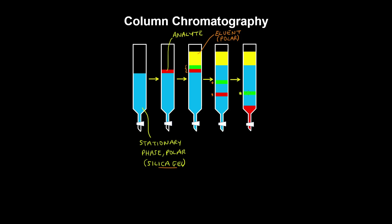The red analyte travels the furthest and exits the column first. The eluted molecules are collected and analyzed using a composition technique. That's the basic idea behind column chromatography.